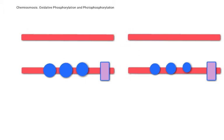In mitochondria, there's the outer membrane and the inner membrane, and in chloroplasts, it's the thylakoid membranes and the gap between the two. You've also got an electron transport chain in both of them, and then you've got ATP synthase here and here.